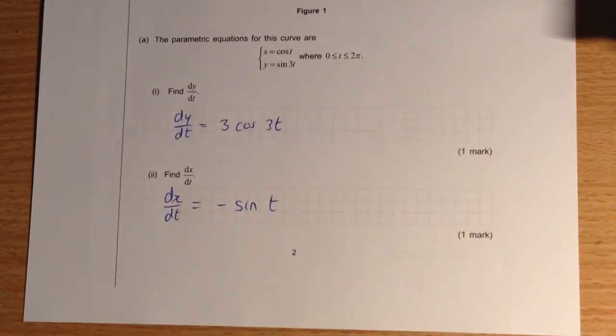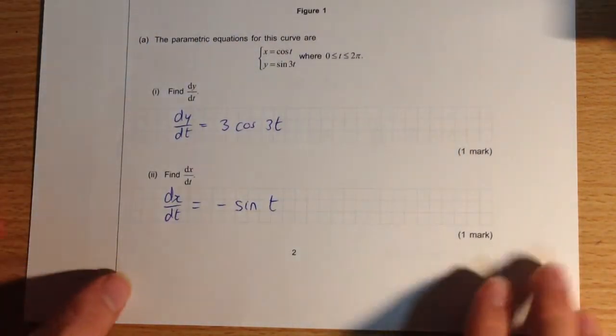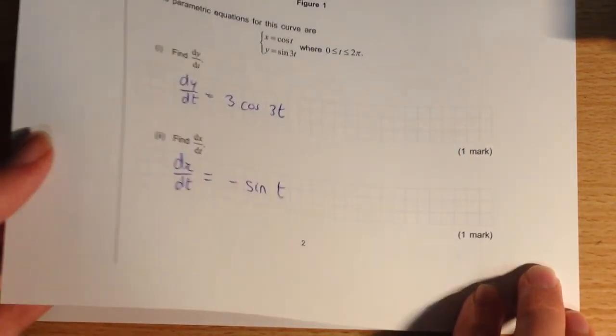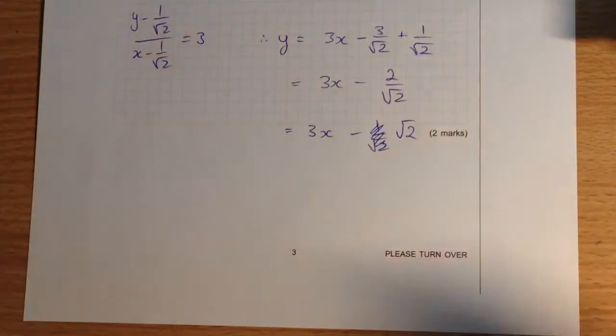For x, we do a similar thing. We know that the first derivative of x equals cos t is evidently going to be negative sine t. That should be from the basic formulas that you should remember from the differentiation topic.